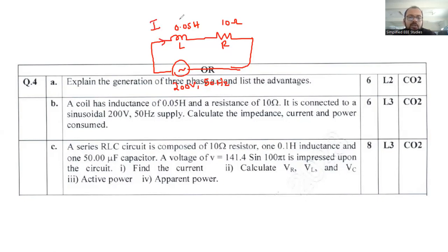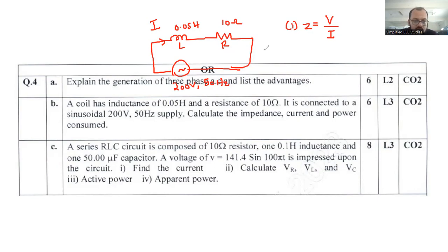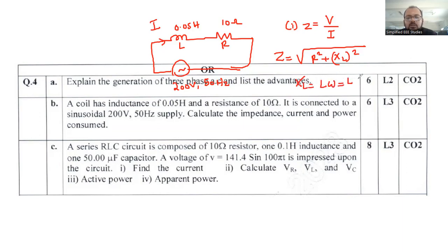To calculate impedance, you can use Z = √(R² + XL²), where XL is the inductive reactance equal to Lω = L × 2πf. Since f is already given, compute XL, then substitute R directly to get Z. Current is then I = V/Z, and from I = V/Z you can also write Z = V/I.